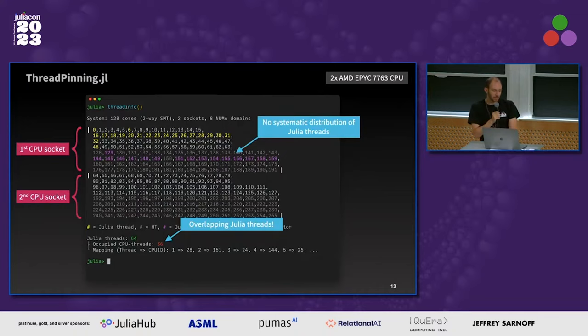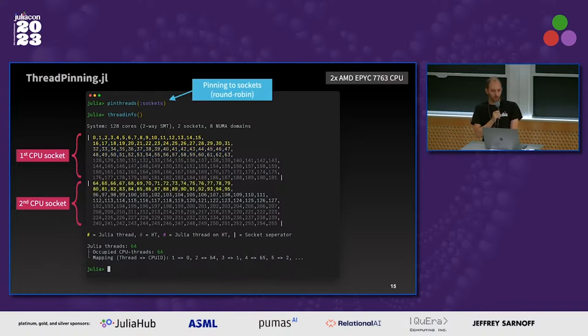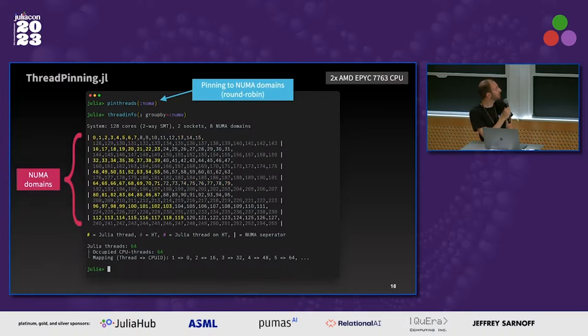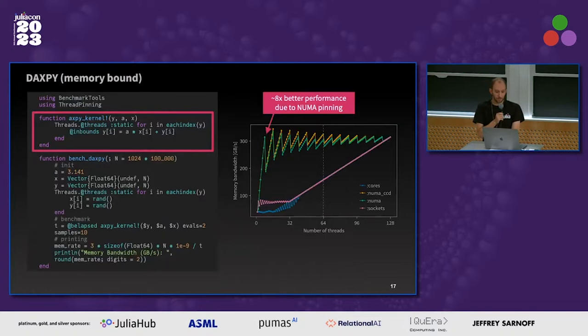So how does it look? If you run threadinfo, you get a visualization. In this case, it's a two CPU socket system, and there's no systematic distribution of Julia threads — they are overlapping, in fact. Then you can use pinthreads(:cores) and everything is pinned to cores. With pinthreads(:sockets), it's pinned in a round-robin fashion to different sockets. You can pin to NUMA domains, and you can also visualize the NUMA domains. You can do all of this interactively in the REPL, in a Jupyter notebook, whatever.